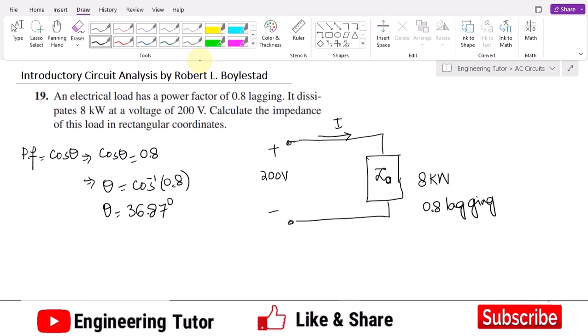So now what else do I have? I have this power as well. That is the power dissipated and that is basically the real power. So I know that real power is P equals I V cosine of theta, where cosine of theta is the power factor which I already know.